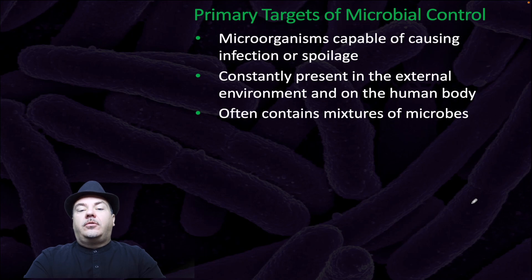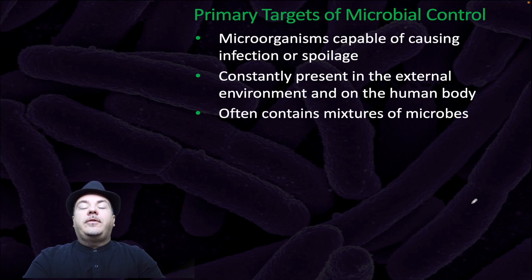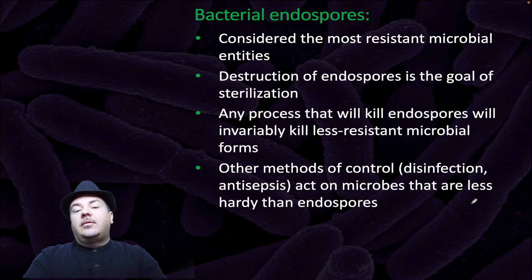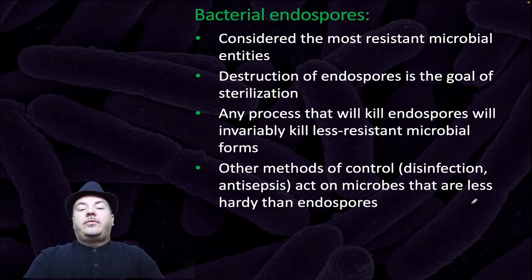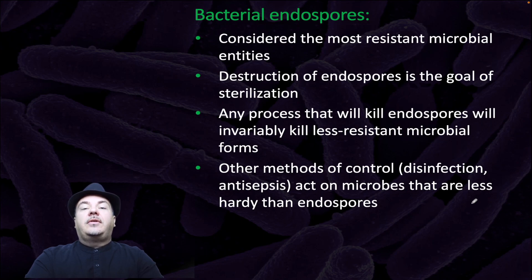The primary targets of microbial control are microorganisms capable of causing infection or spoilage, constantly present in the external environment and on the human body, and often containing mixtures of microbes. Bacterial endospores are considered the most resistant microbial entities. Destruction of endospores is the goal of sterilization. Any process that will kill endospores will invariably kill less resistant microbial forms. Other methods of control, like disinfection or antisepsis, act on microbes that are less hardy than endospores.